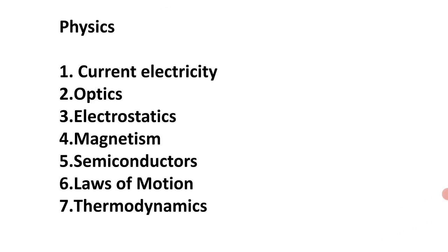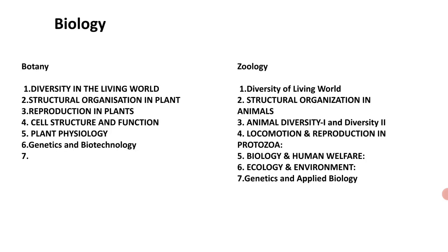For physics, most questions for engineering students came from current electricity, optics, electrostatics, magnetism, semiconductors, laws of motion, and thermodynamics. We are expecting the same for agriculture and medicine students. If you practice these chapters, you will definitely get 20 marks in physics. And if you practice botany and zoology properly, you will get 50 to 60 marks.